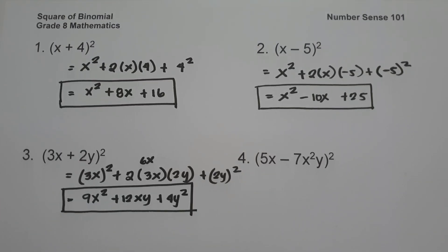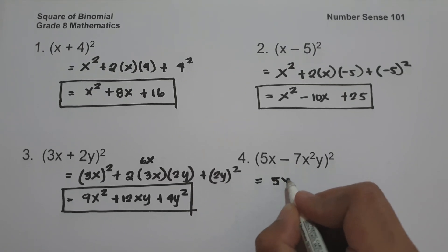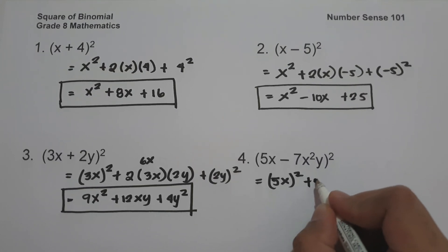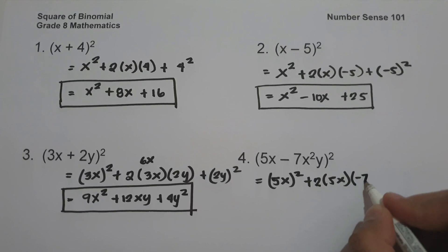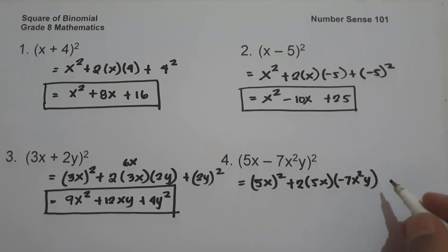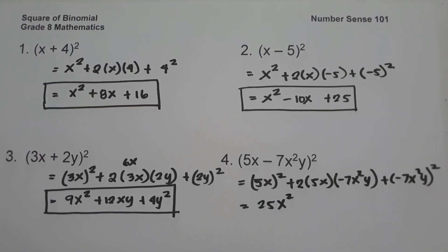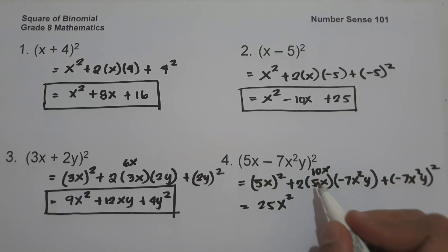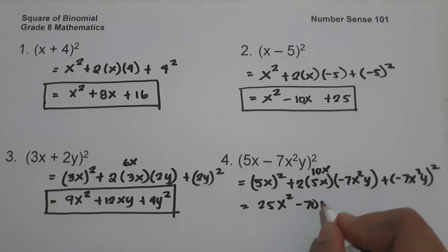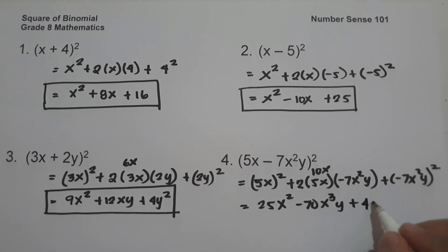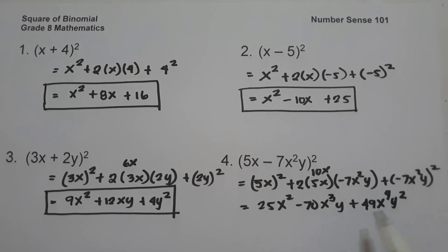On number four, we have the quantity (5x - 7x²y) squared. To simplify, let us square the first term: (5x)² = 25x². Then multiply the first and last term by 2: 2 times 5x times negative 7x²y, which gives 10x times negative 7, that is negative 70x³y. Plus the square of the last term: (-7x²y)² = 49x⁴y², and this will be our answer.